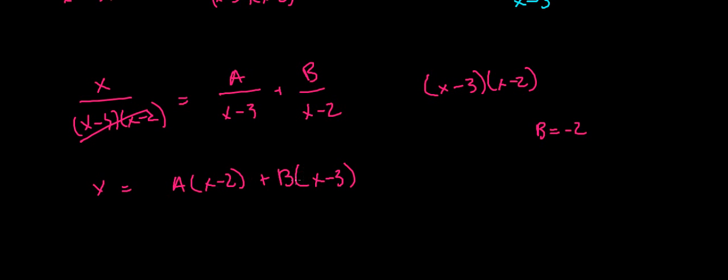And if I were to go back here and say, well, if x was equal to positive 3, then this would be 0. x minus 2, which is 3 minus 2, which is 1, x is still equal to 3, and I will get a is equal to 3.